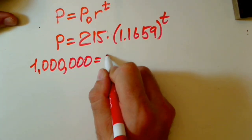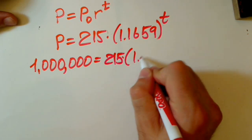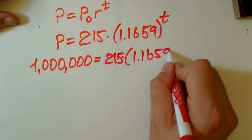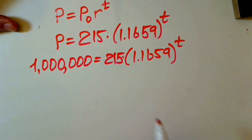Then, what is going to happen? When we have 215 initial times 1.1659 times T. Now, when we have only one unknown, let's find T.